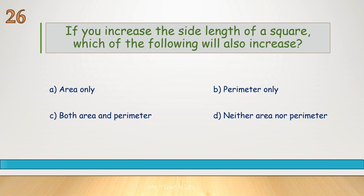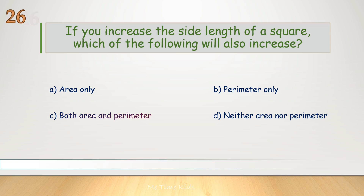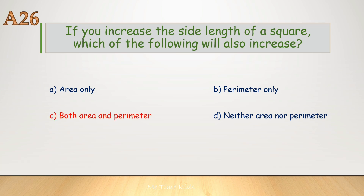If you increase the side length of a square, which of the following will also increase? Correct answer is C, both area and perimeter.